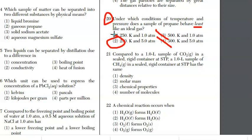For question 21, compared to a one liter sample of CO2 gas in a sealed rigid container at STP, one liter sample of methane CH4 at STP has the same. They would not have the same densities or molar mass. They definitely do not have the same chemical properties. It has to be the number of molecules. As long as your volumes, temperatures, and pressures are equal for different gases, they will have equal numbers of molecules.